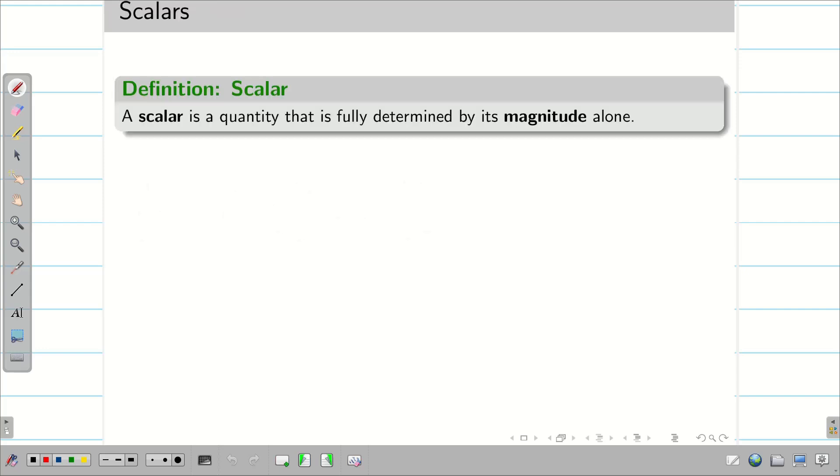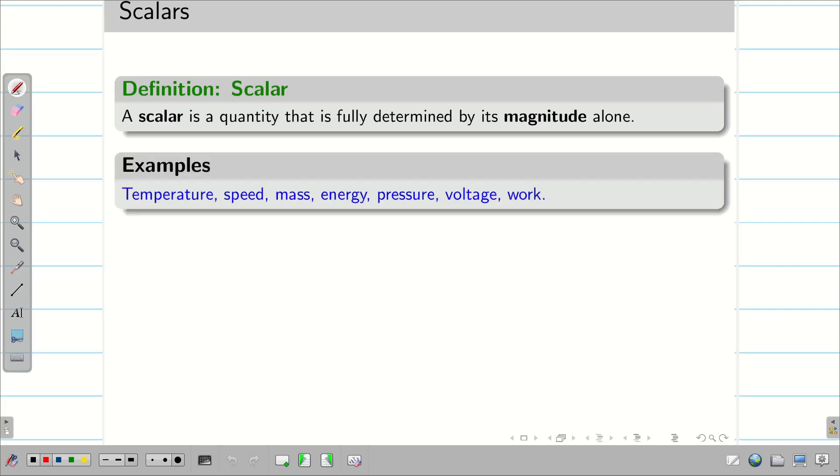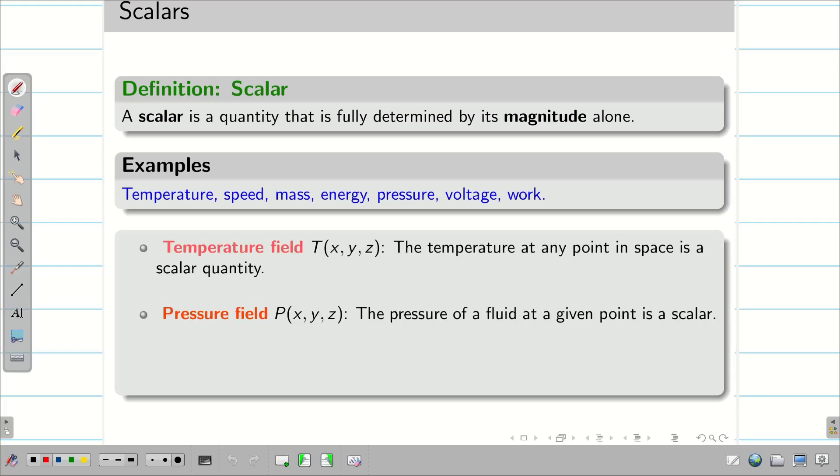A scalar is a quantity that is fully determined by its magnitude alone. We can see some examples: distance, speed, mass, energy, pressure, all these things are scalar quantities. The pressure of a fluid at a particular point is a scalar. Similarly, electric potential, temperature field, all are scalars. It does not depend on any direction. It depends only on the magnitude.